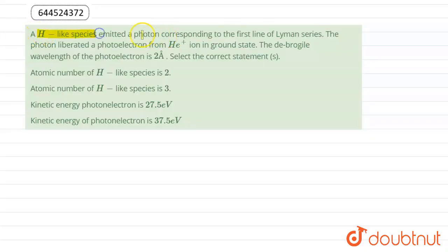A hydrogen-like species emitted a photon corresponding to first line of Lyman series. The photon liberated a photoelectron from helium plus one ion in ground state. The de Broglie wavelength of photoelectron is 2 angstrom. Select the correct statement.